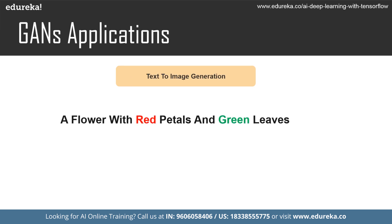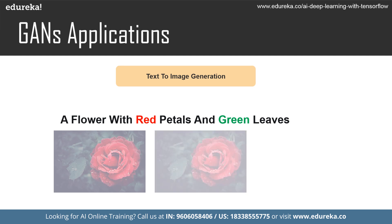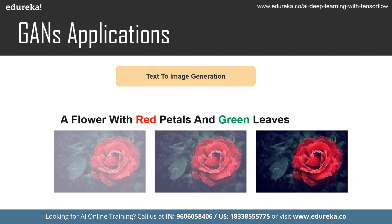The second application is text-to-image generation. Object-driven attentive GAN, also known as Object-GAN, performs text-to-image synthesis in two steps: first generating a semantic layout, then synthesizing the image using a deconvolutional image generator. This generates images by understanding captions and layouts with refined details. There is also story-GAN, which can synthesize an entire storyboard from mere paragraphs.